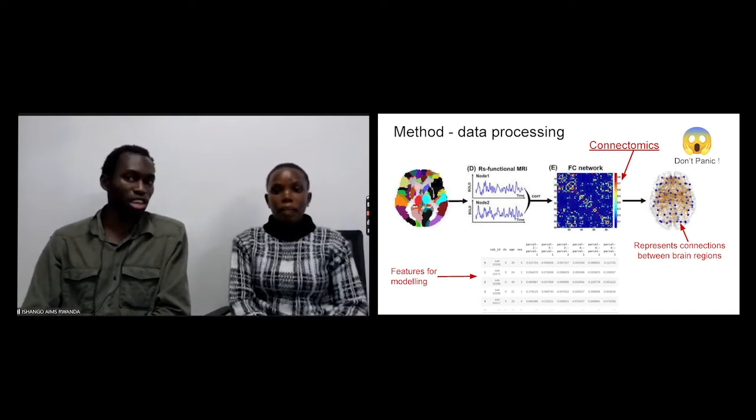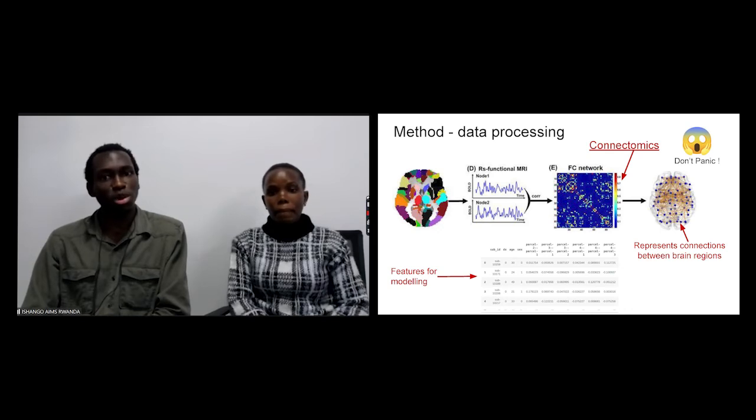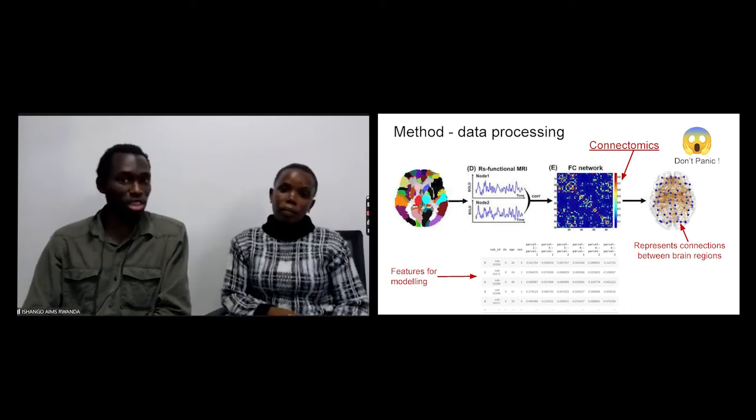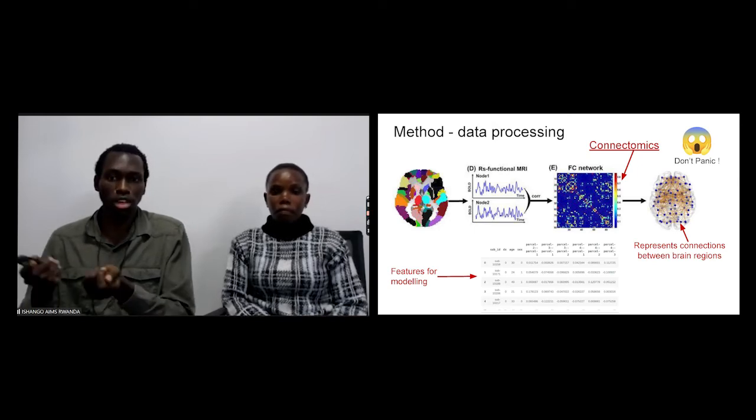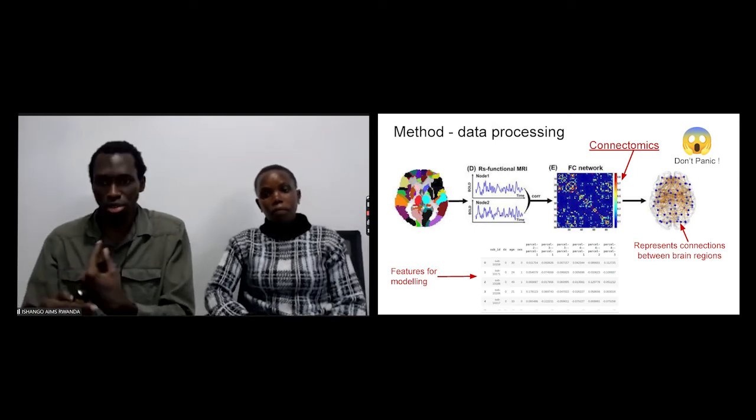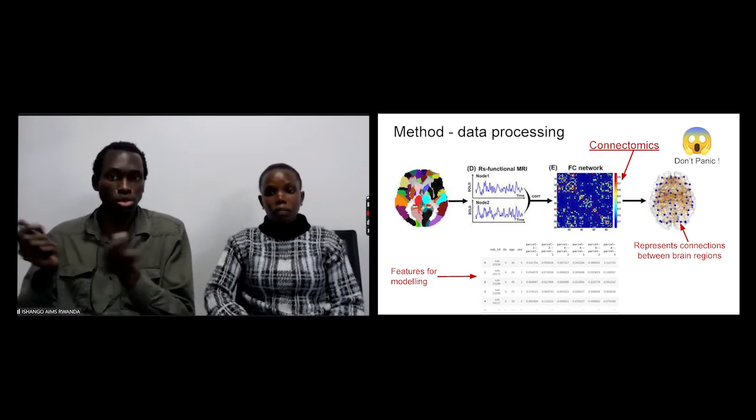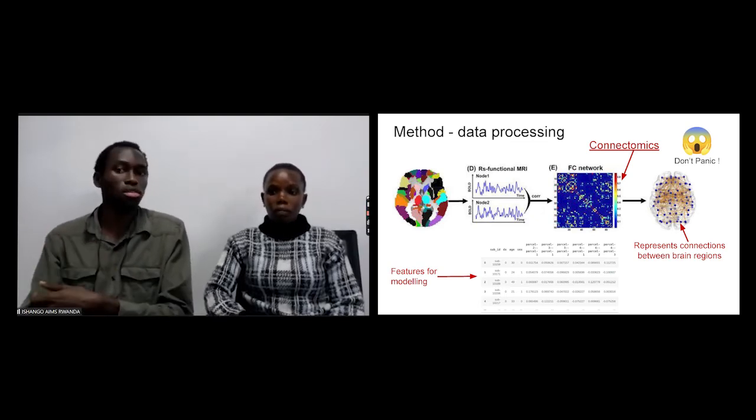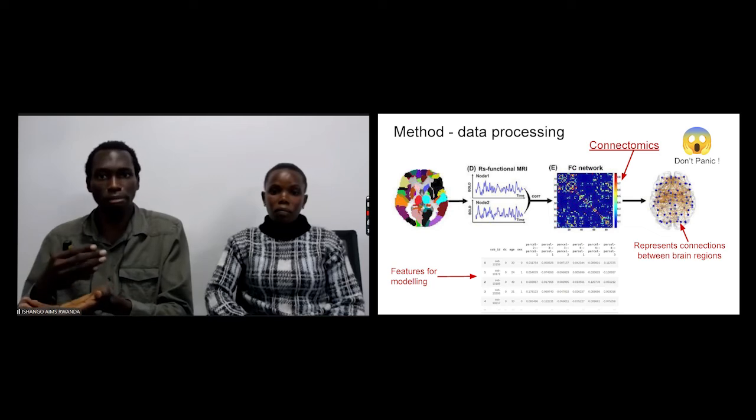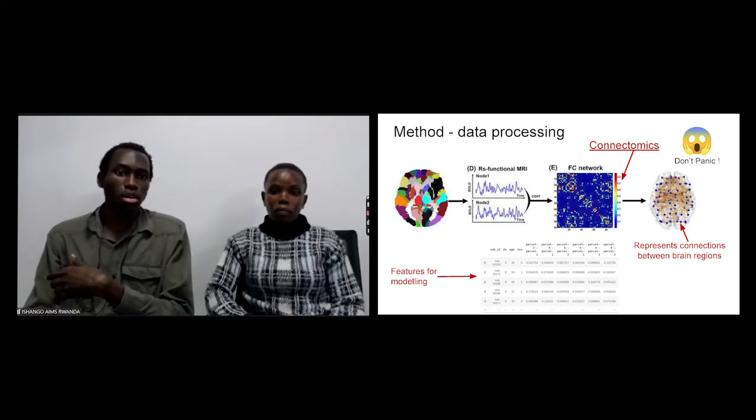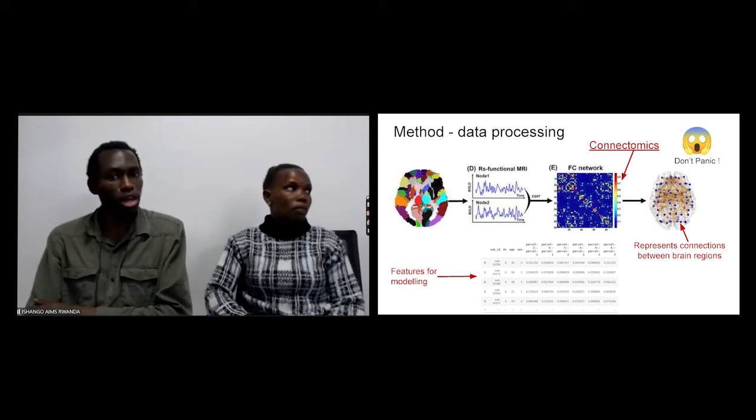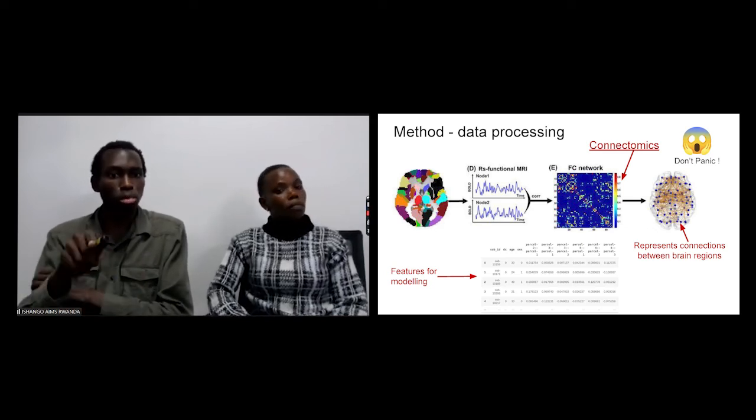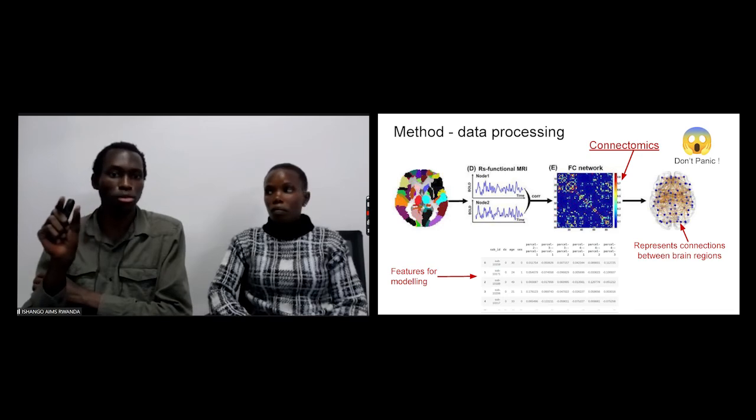It's not so complicated, no panic. We get the connectomics from the data. The connectomics is how different areas of the brain interact together. Then we can use those interactions as an input for our experiment. In this table, you can see how the data looks like after preprocessing. Each number shows how two different areas of the brain interact together, maybe the audition and the vision, for example.